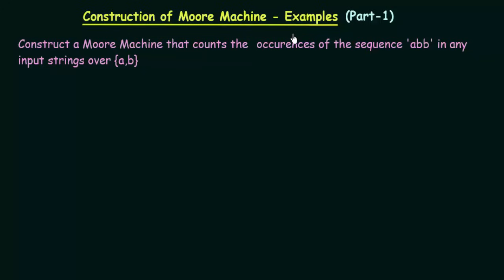In the last lecture, we studied how to construct Moore Machines. In this lecture, we will see another example of construction of a Moore Machine. Here is our example: construct a Moore Machine that counts the occurrences of the sequence ABB in any input strings over AB. So, our task is to design a Moore Machine that takes any inputs over AB and counts how many times the sequence ABB occurs in the input string.